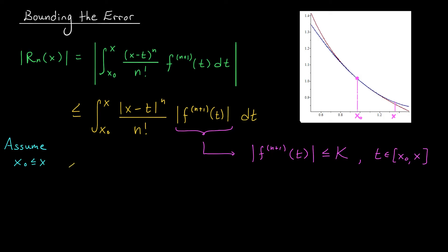These two cases are both very similar, so I'm going to assume that x occurs to the right of x0. I'm going to assume that x0 is less than or equal to x. So in this case, my integral is less than or equal to k times the integral from x0 to x of (x minus t)^n over n factorial dt.